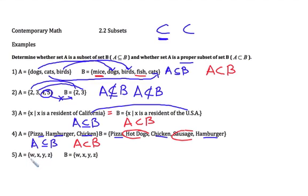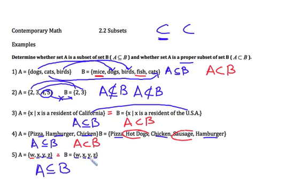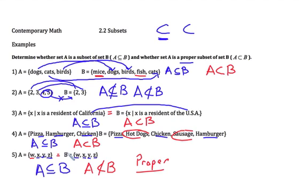In our next example, set A has letters W, X, Y, and Z, and set B also has W, X, Y, and Z. Every element in A is also in B, so A is a subset of B. But there are no extra elements in B, so they are equal — and A is not a proper subset of B. When we think of 'proper subset,' proper means smaller. If they're equal, it's not going to be proper.